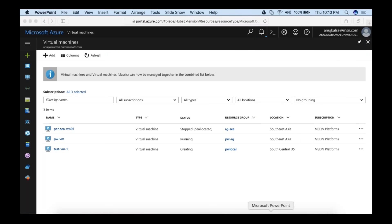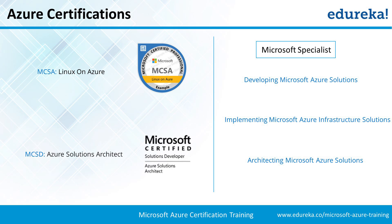Let's check the certifications. We have MCSA which includes two certifications — if you're doing this as a developer, that is 70-532; if you want to do it for infrastructure engineering, that is 70-533. If you want to work on Azure for maybe two years and then do the architecting certification, that's 70-534. Doing one makes you an MCP. Doing two — developing and implementing — makes you MCSA. Doing all three makes you MCSD.